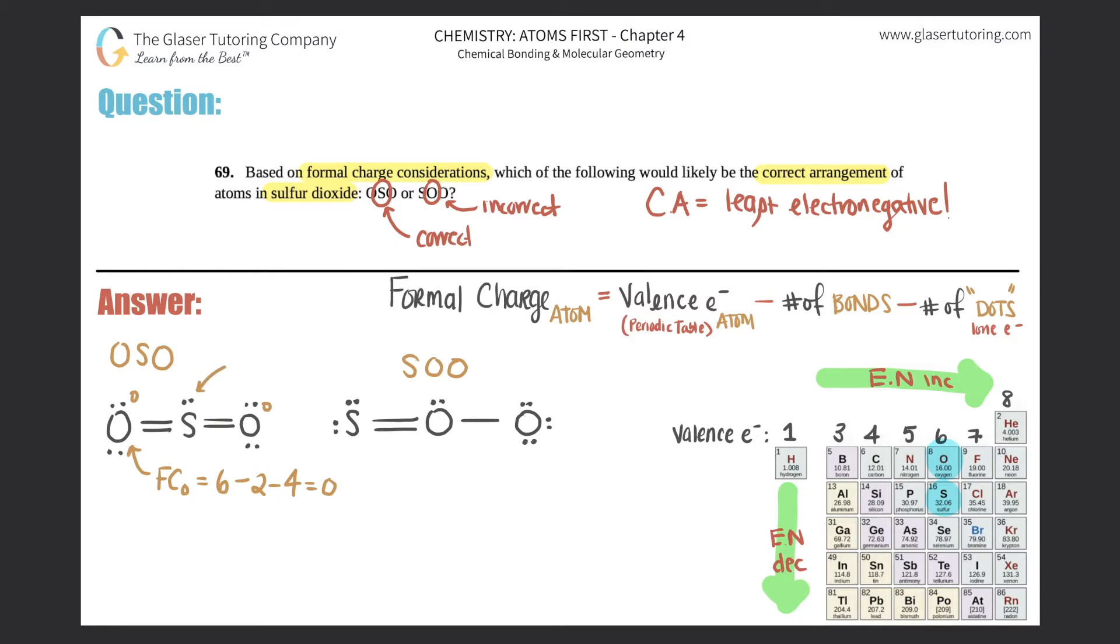Now let's do this sulfur. Formal charge of the sulfur is valence electron - sulfur has six valence electrons. Six minus how many bonds does it have? Four. Minus how many dots? Two. And that you get zero as well. So in this compound, OSO, all atoms are neutral. They're chilling. They're okay. They're perfect. If an atom is neutral, that means that it's pretty stable. It's the most stable it's going to be.